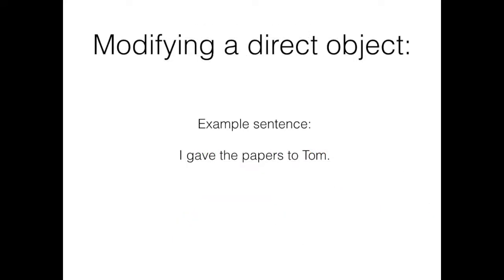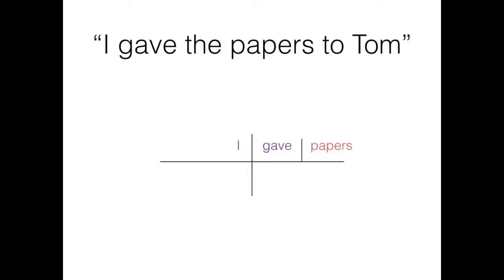So in the sentence 'I gave the papers to Tom,' we can identify the subject I, the verb gave, and a direct object, papers. We then have the prepositional phrase to Tom, which tells us who we gave the papers to. So we'll diagram it under papers.